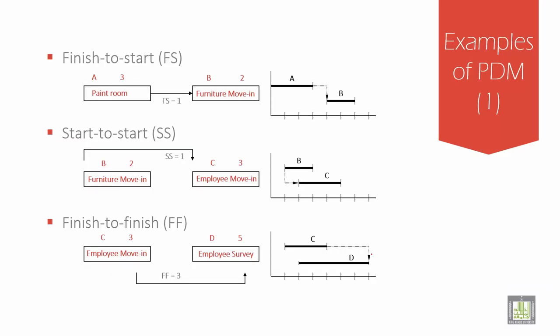First one here, finish-to-start is a logical connection in which the successor activity cannot start until the predecessor activity has finished. For example, the paint room is A3. We have a delay, a lag time of 1. This starts from here, 1, 2, 3. Then it has a lag of 1. After finishing this lag, it starts with 2. This is that lag, that 1.